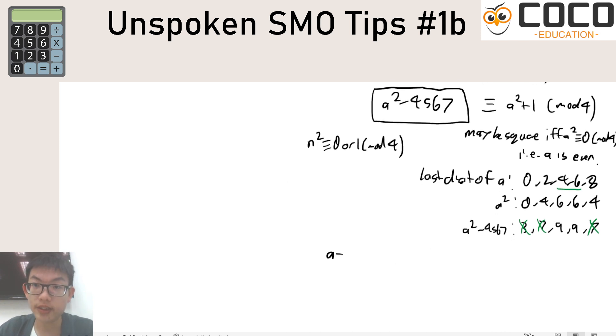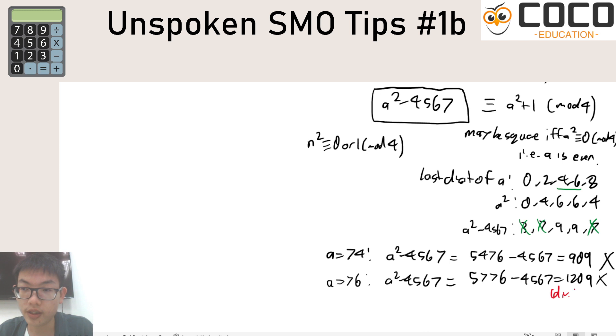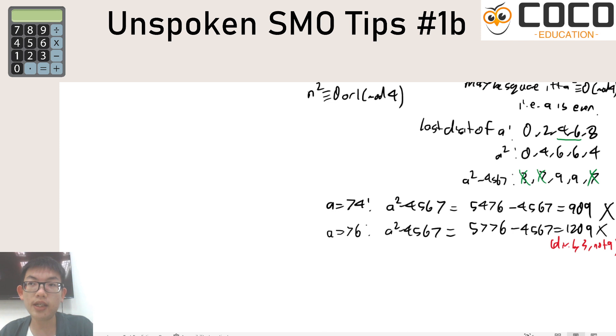So let's say we did that. a is 74, this is 909, 909 is not a square. If we went up this would have increased by 300 to 1209 and 1209 is not a square because this is divisible by three but not nine. And then you can jump up all the way to 84 already, so this would be 7056 minus 4567 is 2489 which is a bit less than 2500 so that cannot work.